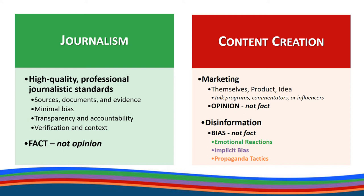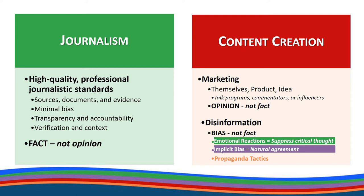Many content creators also knowingly post and share information they know is not grounded in fact. They count on their audiences to buy into it based on three types of bias: emotional reactions, implicit bias, and propaganda tactics. Emotional response triggers high levels of emotion, which then suppresses critical thought. Implicit bias or preconceived beliefs make the audience more inclined to naturally agree with the information presented as it confirms their own thoughts and ideas, while propaganda compounds bias with emotions like fear to advance a political agenda.